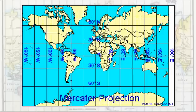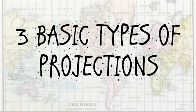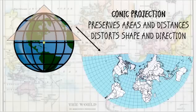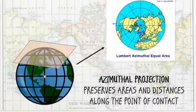Different projections are chosen to represent area, distance, direction, and shape as accurately as possible. And no map in the world can represent all four aspects correctly, so there are compromises. There are three basic types of projection, and each one distorts and preserves different aspects in the map. A cylindrical projection preserves shape and direction while it distorts areas and distances. Conic projections preserve areas and distances while it distorts shape and direction. And azimuthal projections preserve areas and distances along the point of contact between the Earth and the plane.